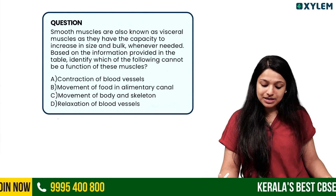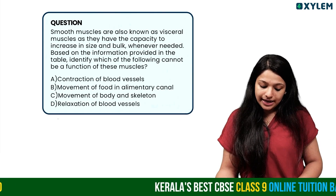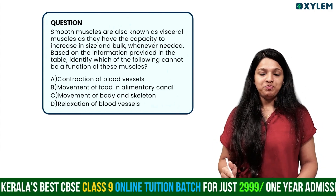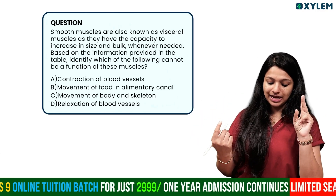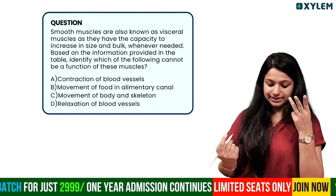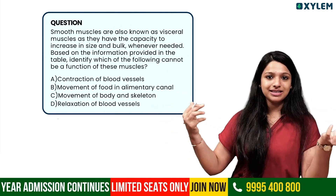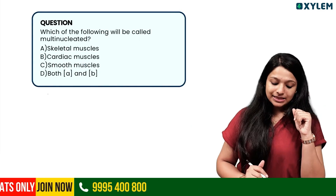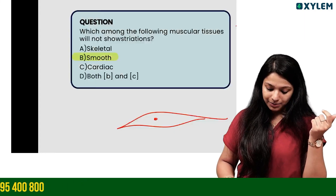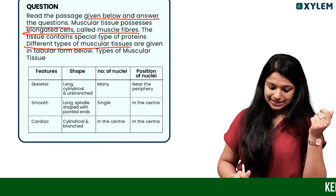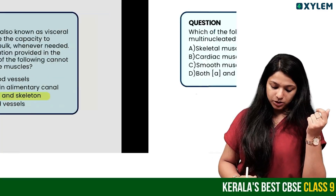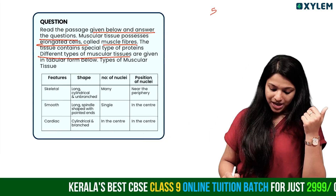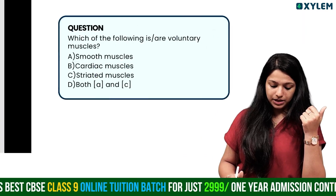Smooth muscles are also called visceral muscles and have the capacity to increase in size and bulk whenever needed. Which of the following cannot be a function of smooth muscle? Movement of body and skeleton is a skeletal muscle function — not smooth muscle. Which type is multi-nucleated? Skeletal muscle has many nuclei, so skeletal muscles are multi-nucleated. Smooth muscle has a single nucleus.